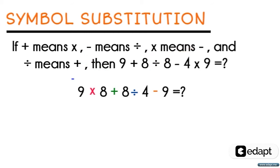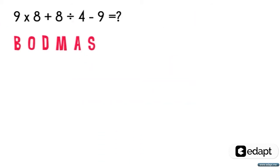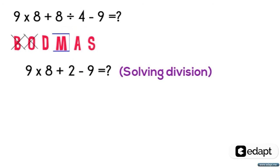Now solving this through the BODMAS rule, both first and second operations should be in bracket and order, which is absent in this equation. So the next operation is division. It will become 8 divided by 4, which we will get 2. The next order is multiplication, hence we will get 9 into 8 as 72.